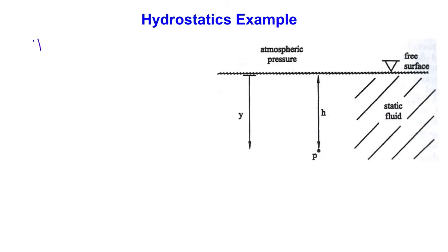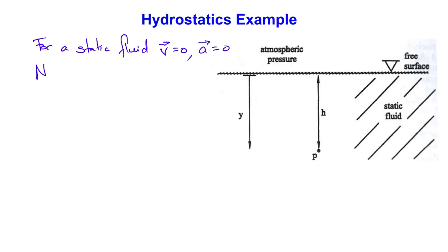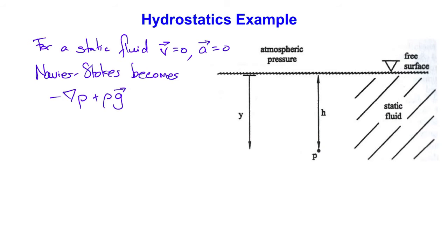For a completely static fluid, the velocity and acceleration are both zero, and the Navier-Stokes equations simplify to minus the pressure gradient plus the body forces equals zero.